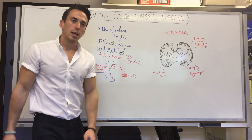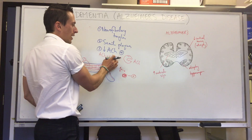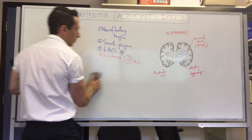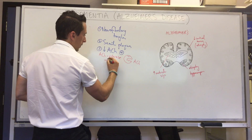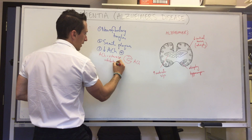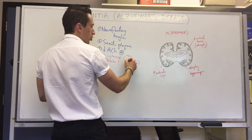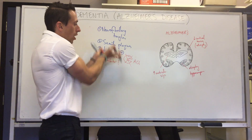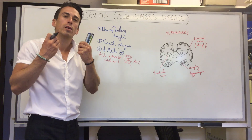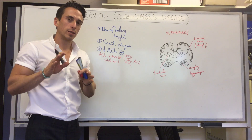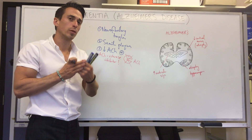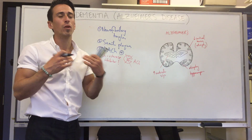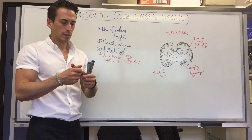If we give a patient an acetylcholinesterase inhibitor, that stops the enzyme from breaking down acetylcholine, resulting in higher levels of acetylcholine in the system. We can't cure Alzheimer's disease at the moment and can't stop the neurodegenerative process, but by maintaining higher acetylcholine levels for as long as possible we can mitigate some of the symptoms.